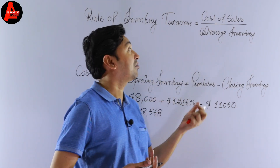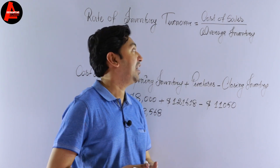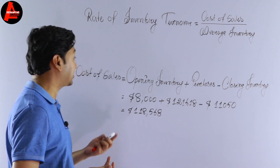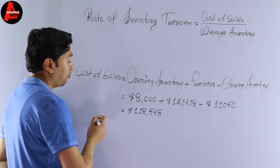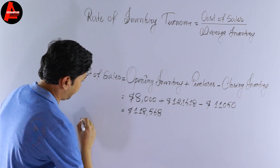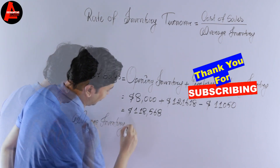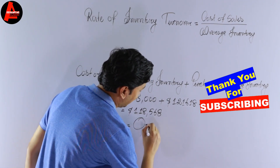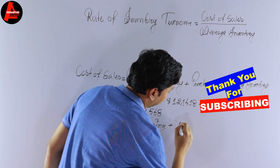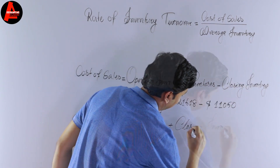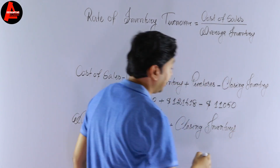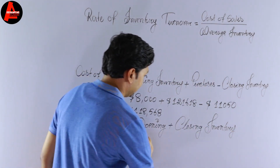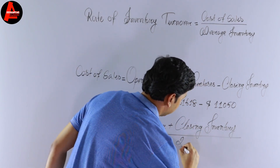Now we need to calculate average inventory. Average inventory equals opening inventory plus closing inventory, divided by 2.